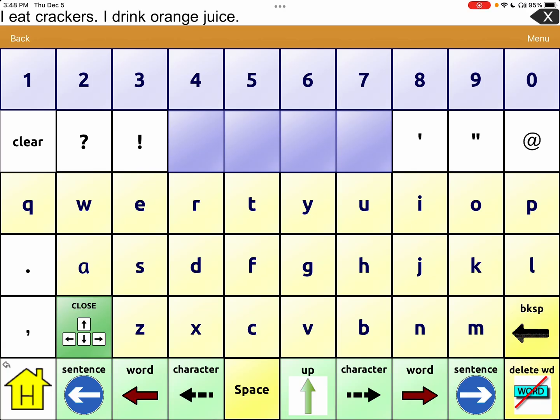And then I can backspace. I didn't mean to do that. And then I'm going to do I eat crackers and cheese. And again, you can select this from the pictures, but I'm just typing I eat crackers and cheese. I drink orange juice.